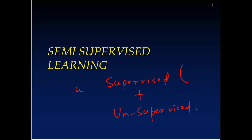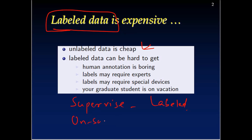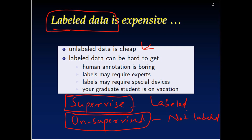Why are we interested in semi-supervised learning? The labeled data is very expensive to get in many instances, while unlabeled data is quite cheap. Supervised learning is used when data is labeled and unsupervised learning when it is not labeled — meaning there is no target variable. Getting labeled data with a target variable value is quite expensive and sometimes not easy to obtain.